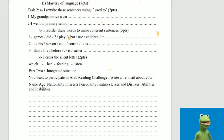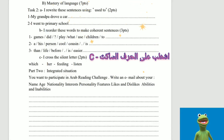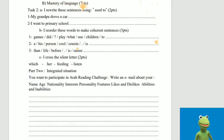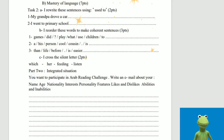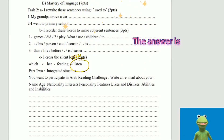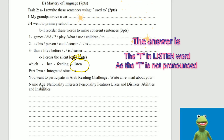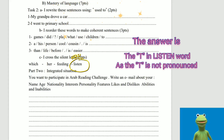C: I cross the silent letter. The words are: which, her, feeding, listen. The answer is the T in the word 'listen,' as the T is not pronounced.